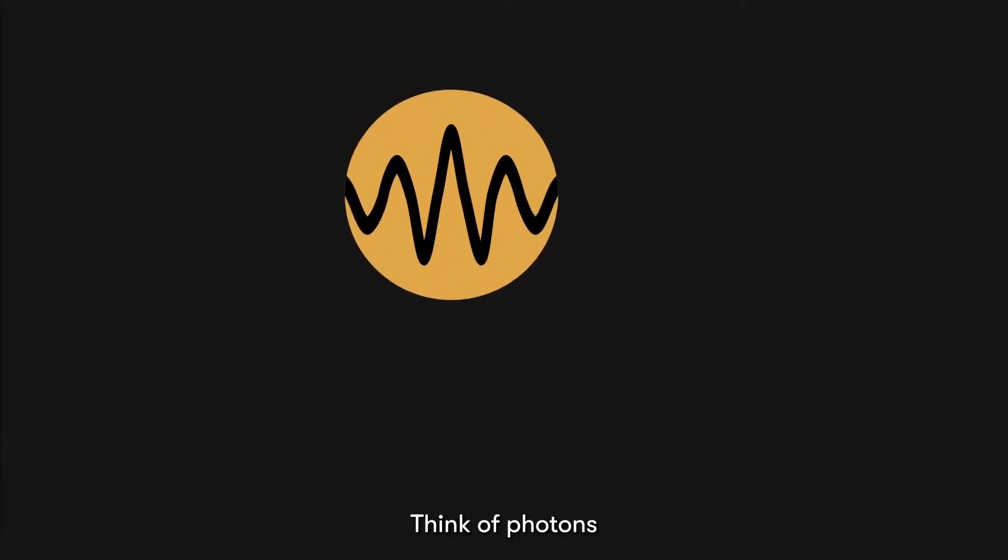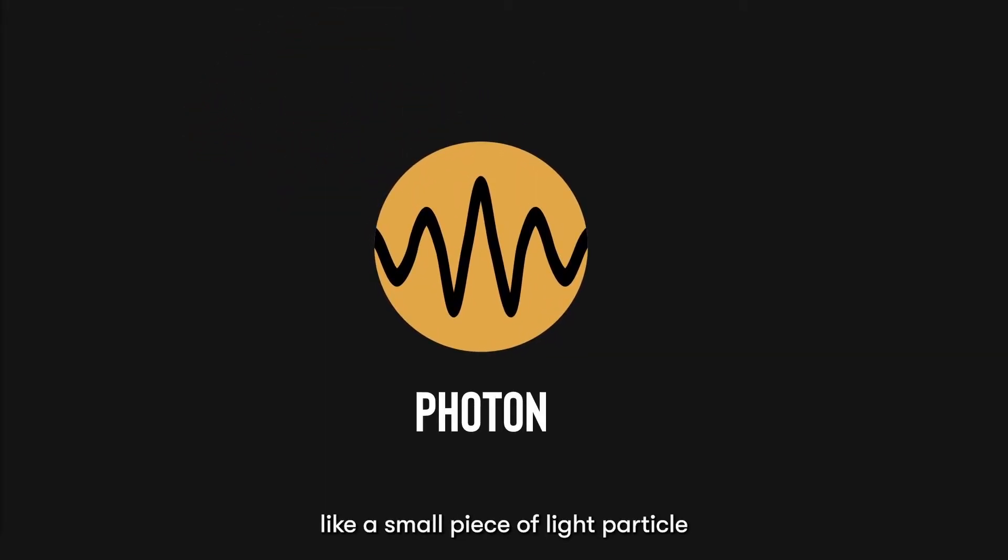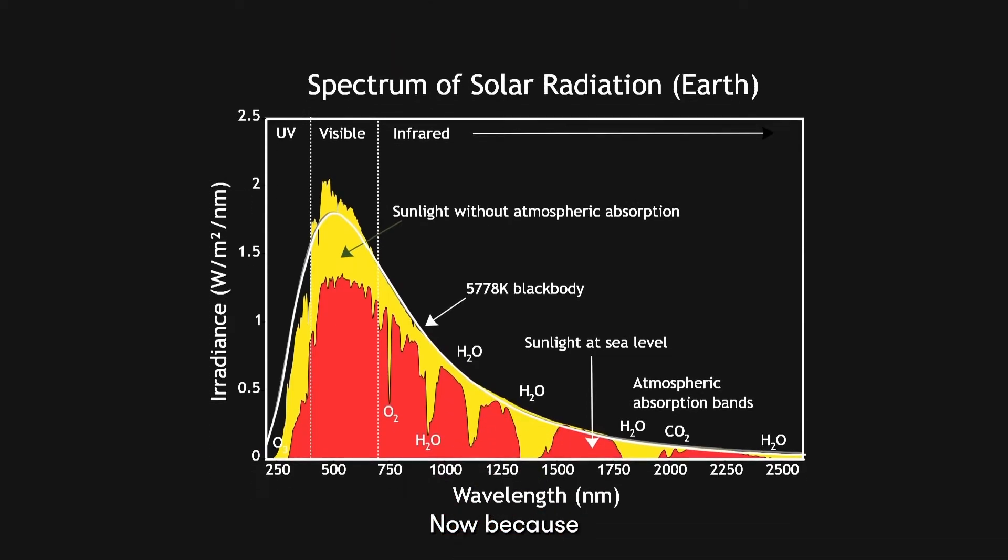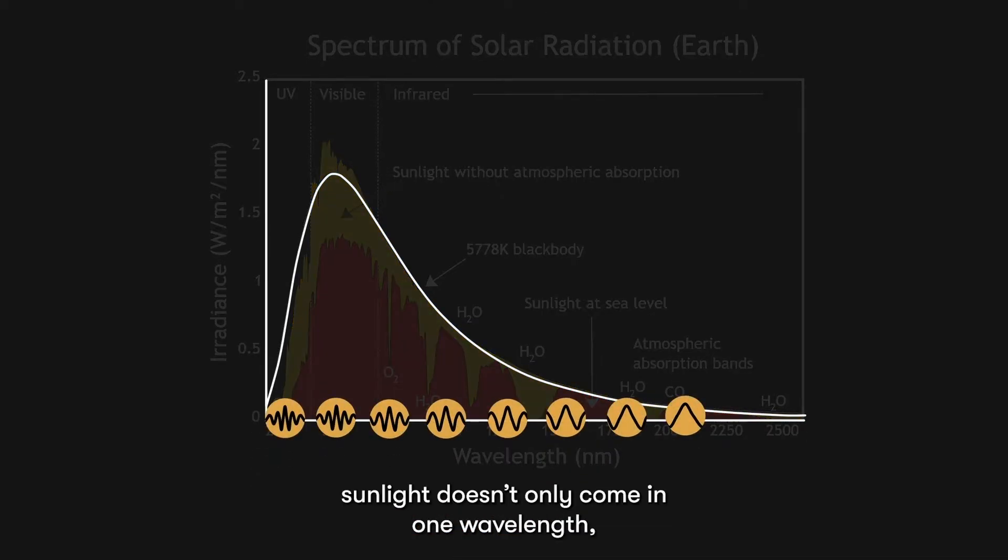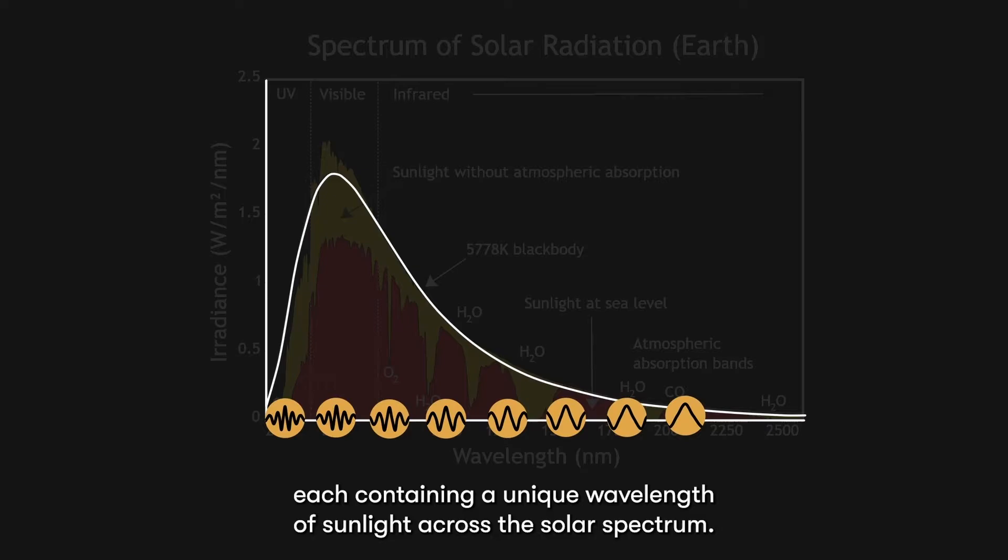Think of photons like a small piece of light particle that contains a specific wavelength of sunlight. Now, because sunlight doesn't only come in one wavelength, it is obvious to us that sunlight consists of many of these photons, each containing a unique wavelength of sunlight across a solar spectrum.